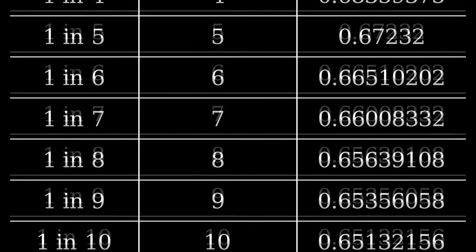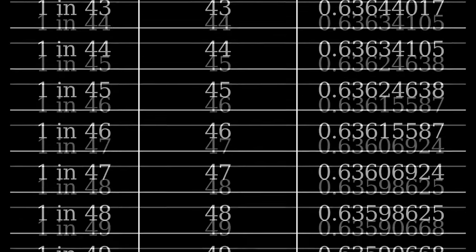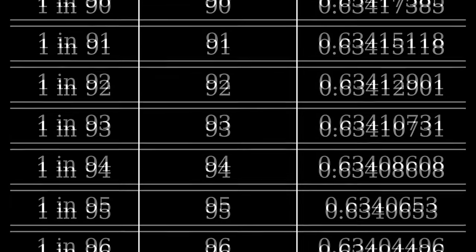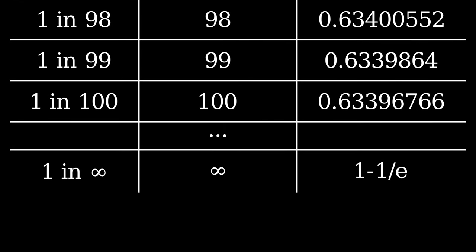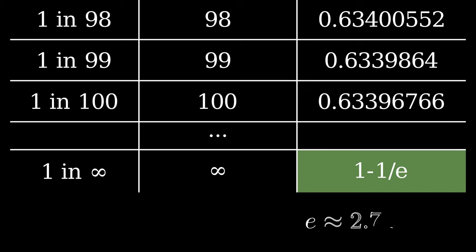Now let's make a table using the first few values of n. Notice how quickly it approaches the 63% value. It turns out that as n approaches infinity, this probability approaches the value 1 minus 1 over e, where e is the natural number, approximately 2.718. It is a special real value with an infinite decimal that does not repeat in the same way pi is.